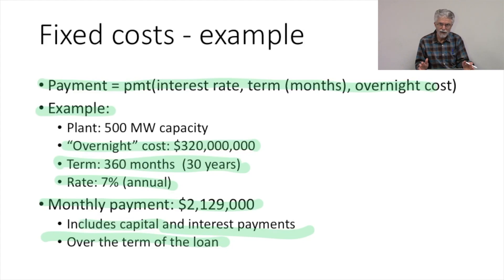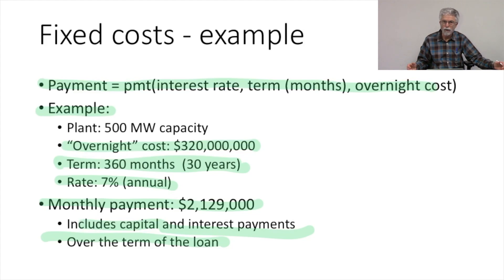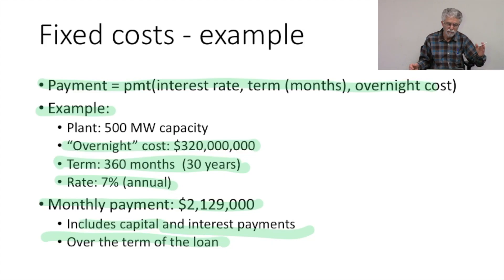It's worth emphasizing that this payment is made whether you ever turn the plant on or not. If you decide to retire the plant early, this payment is still going to be required for the full 30-year term of the loan, no matter how much you decide to use the power plant — it's going to be that monthly check that goes out to pay down the loan every month.